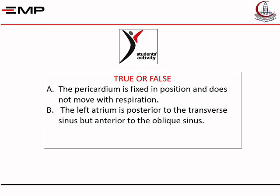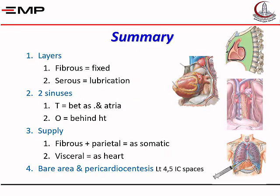The second question: the left atrium is posterior to the transverse sinus but anterior to the oblique sinus. Yes, this is true. The atria, especially the left, intervene between the oblique sinus behind it and the transverse sinus in front of it. In summary: the layers are fibrous — fixed in three directions — and serous — for lubrication. The transverse sinus is between the arteries anteriorly and the atria posteriorly. The oblique sinus is behind the heart or behind the left atrium. The fibrous and parietal are considered somatic, while the visceral is considered as the heart. The bare area of pericardium and pericardiocentesis are done on the left side of the sternum in the fourth and fifth intercostal spaces.